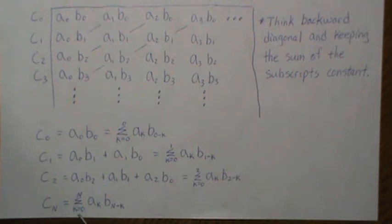cₙ is the sum from 0 to n of these two terms. Notice that you have k plus n minus k; when you add those you get n, which is that subscript.